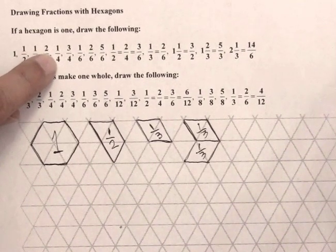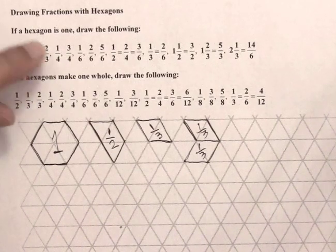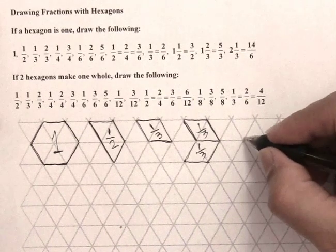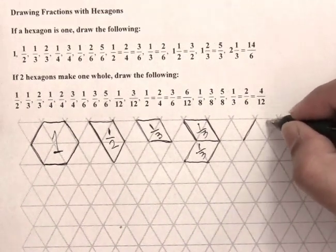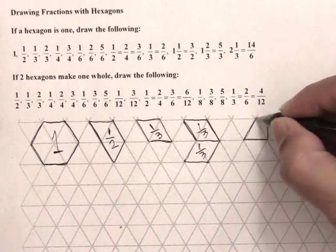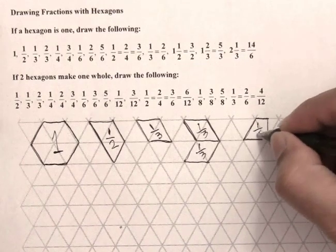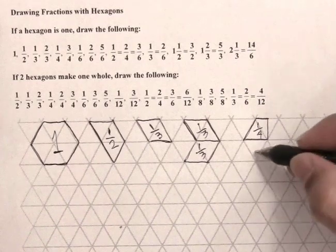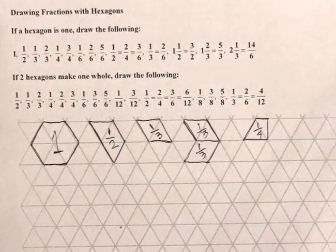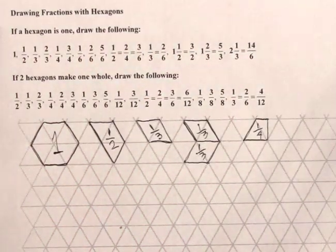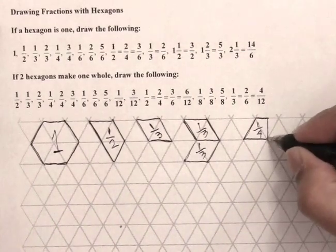Now we have to look at quarters, so we have to break the hexagon into fourths. This is one way of doing that. This is one fourth of the hexagon; here would be the other fourths. So that's one fourth right there. And they ask us to draw three fourths, so I'm going to draw three fourths like this.